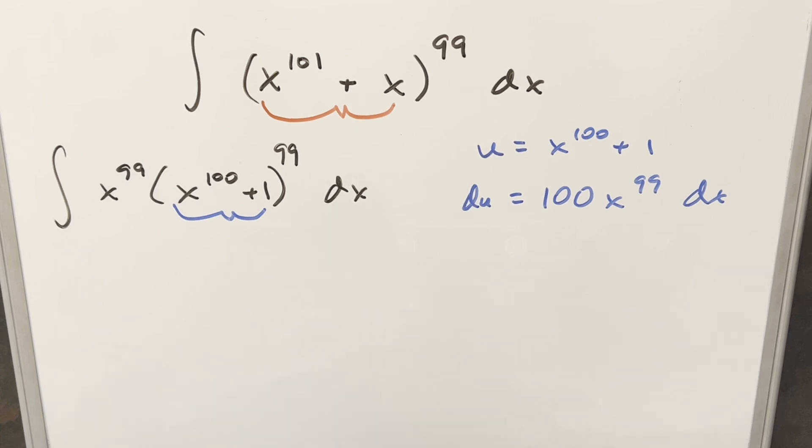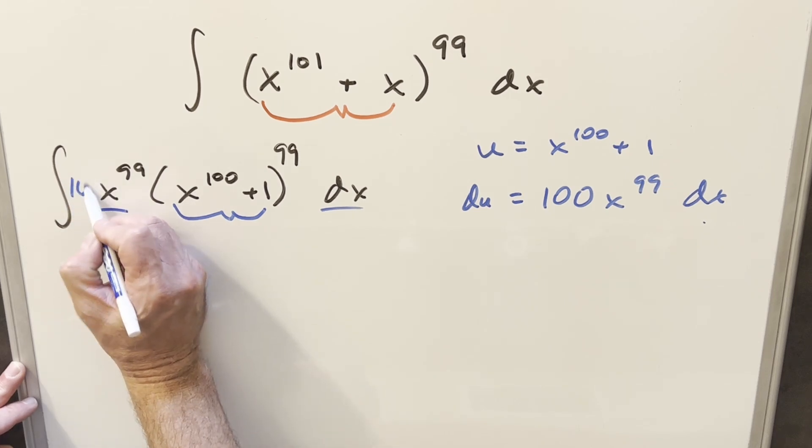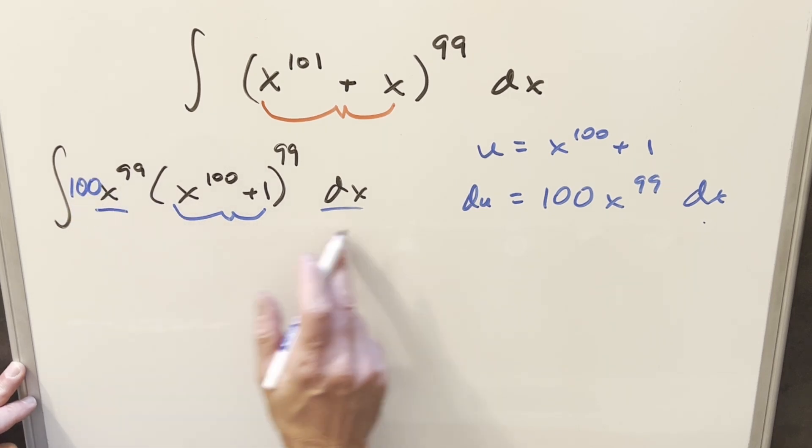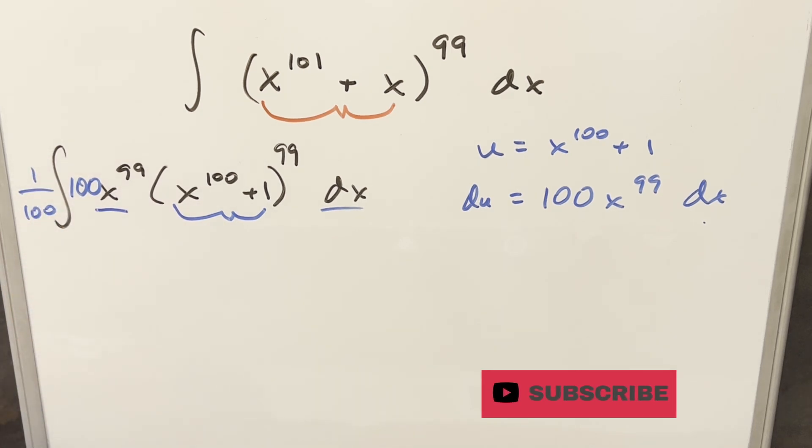And now before I substitute I want to set this up where we have our du. So from this expression we have the dx we have the x to the 99. I can multiply in 100 here so we have everything we need for the du. But so that I'm not changing it I'll multiply by 1 over 100 in front.